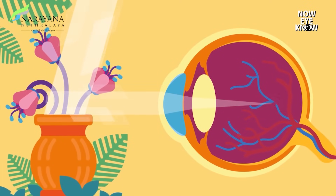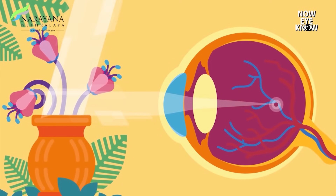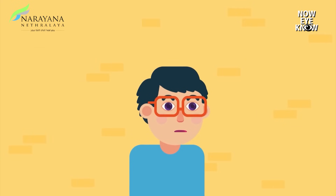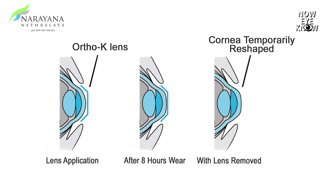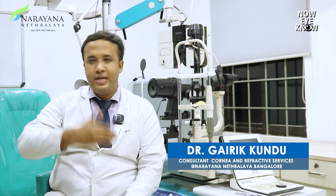Especially in younger patients diagnosed with myopia, powers can keep increasing as they grow. Another important application of the contact lens clinic is orthokeratology. Many kids are being diagnosed with high minus power or myopia and there is a myopia pandemic all over the world. Orthokeratology involves specially fitted contact lenses worn overnight that help in reshaping the cornea, thereby decreasing the probability of the power worsening in younger patients.